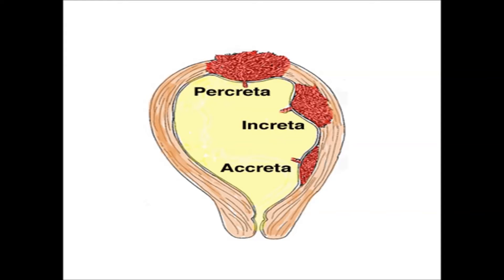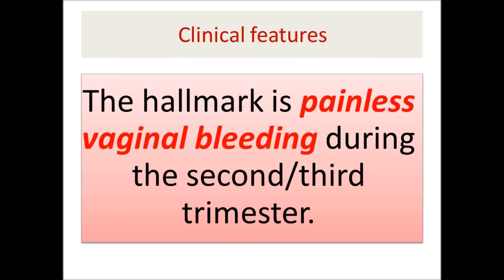The hallmark clinical feature of placenta previa is painless vaginal bleeding during the late second trimester or early third trimester. The mother typically presents around the 30th week of gestation with vaginal bleeding that is painless in most cases.